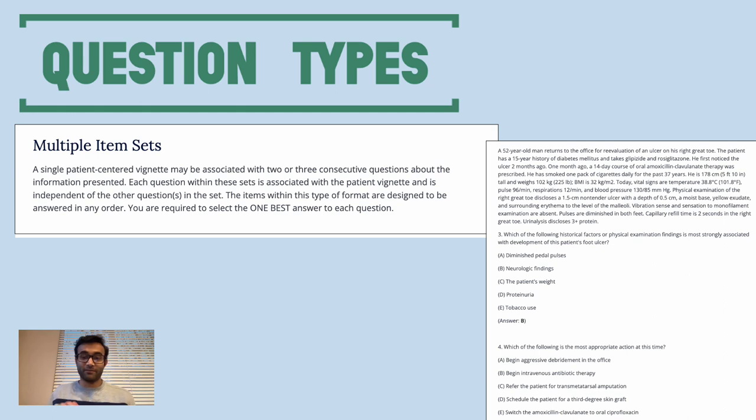You might also have multiple item set questions, and what this means is that you have two questions related to one vignette, and usually you can answer each of them non-exclusively. So what that means is you can answer four without answering three, and you can answer three without answering four. Some questions are like this because they're based entirely on one vignette, but they are not dependent on each other. So your answer to three doesn't influence four, and your answer to four doesn't necessarily influence three, but they may build off of each other.